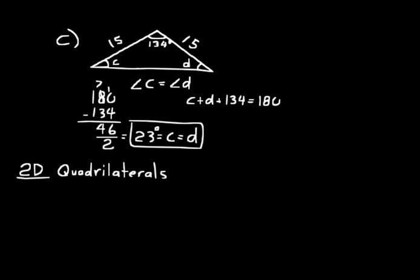Now let's briefly look at some definitions of quadrilaterals. A parallelogram has two pairs of parallel sides — we represent that with tick marks on each pair. A trapezoid has just one pair of parallel sides, represented by one tick mark on each of those two sides.